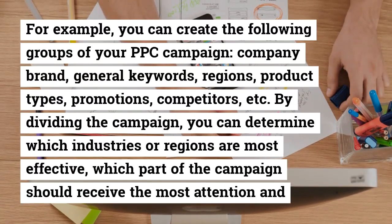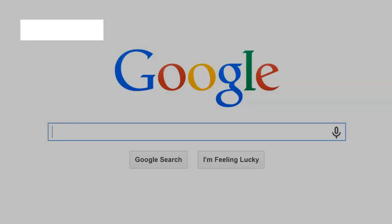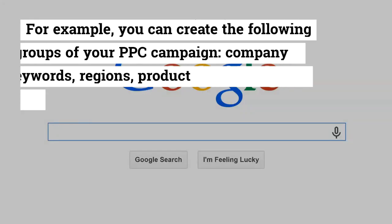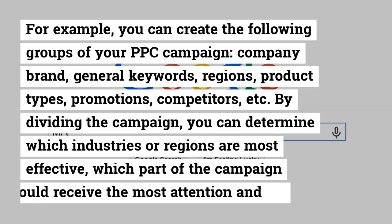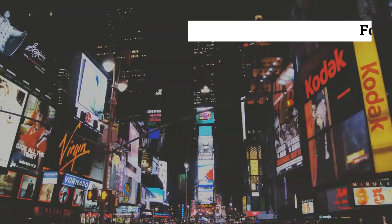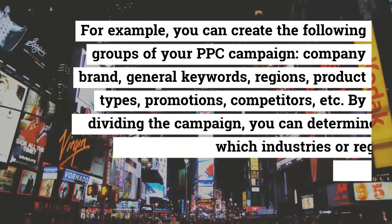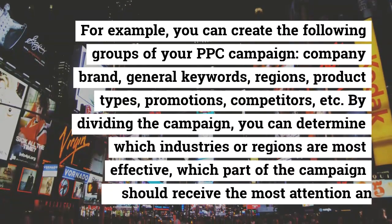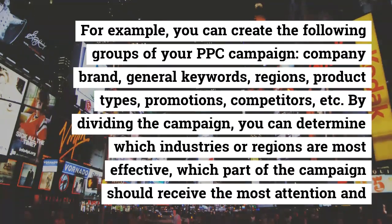For example, you can create the following groups for your PPC campaign: company brand, general keywords, regions, prototypes, promotions, competitors, and more. By dividing the campaign this way, you can determine which industries or regions are most effective, and which part of the campaign should receive the most attention and budget.